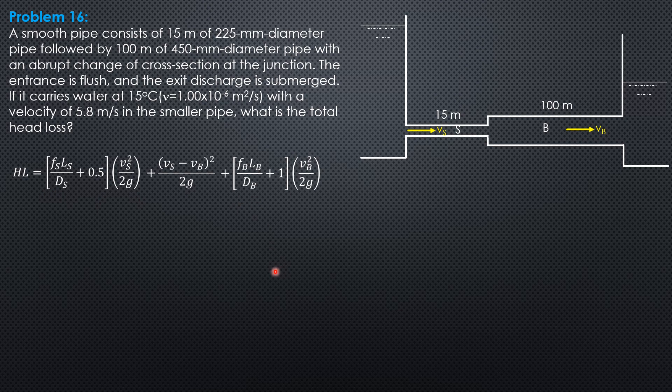Now, let's compute for the Reynolds number in the smaller pipe, diameter s, mean velocity over kinematic viscosity. So Reynolds number in the smaller pipe is 0.225 diameter, velocity 5.8 in the smaller, over 1 times 10 to the negative 6, so that's 1,305,000.